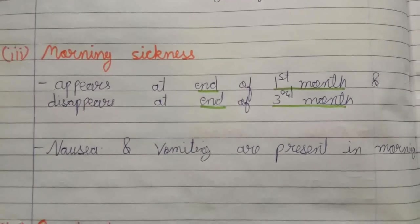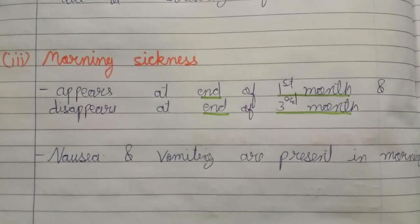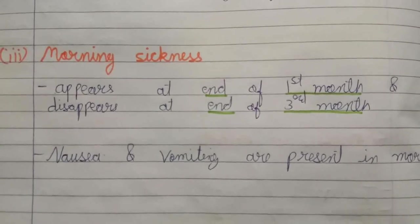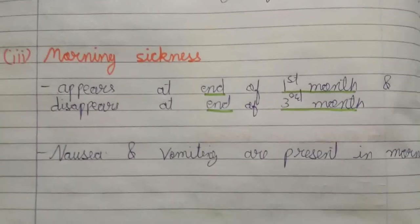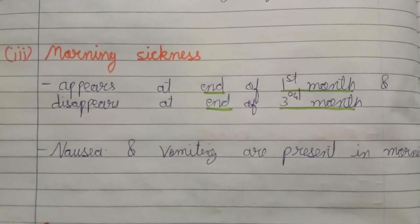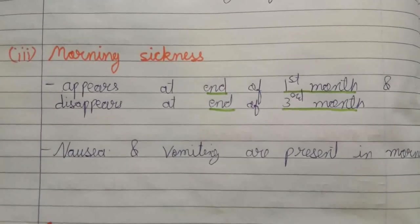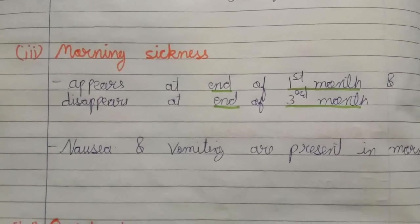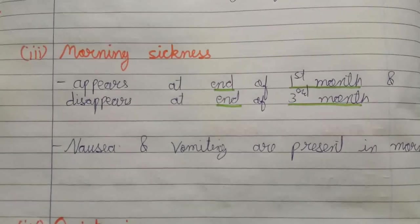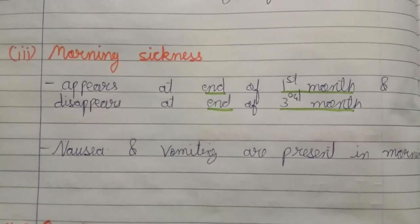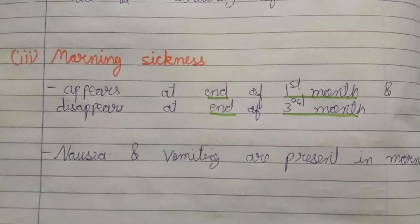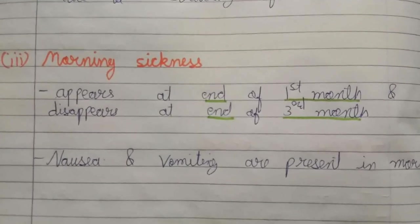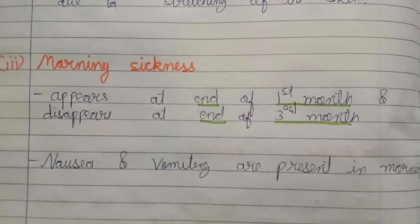The third presumptive sign is morning sickness. Nausea and vomiting are present in the morning and then disappear. This process starts at the end of the first month and disappears at the end of the third month.